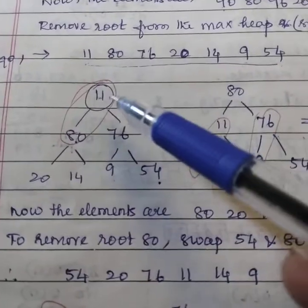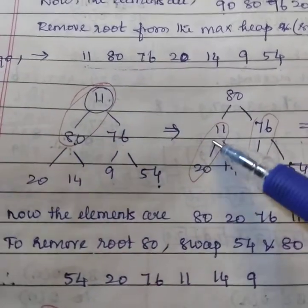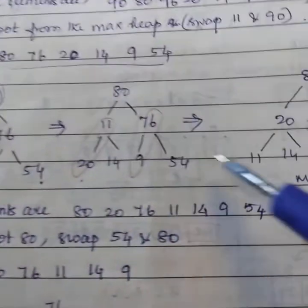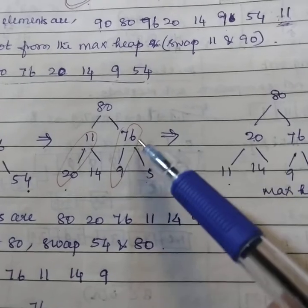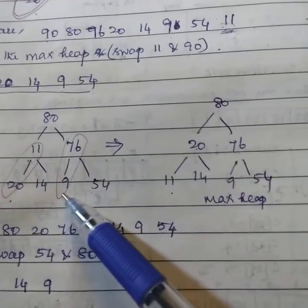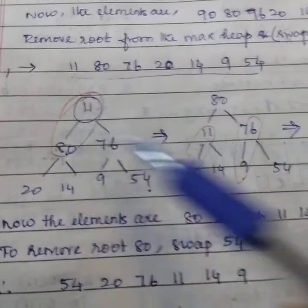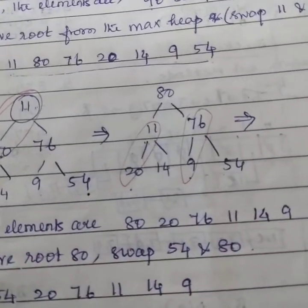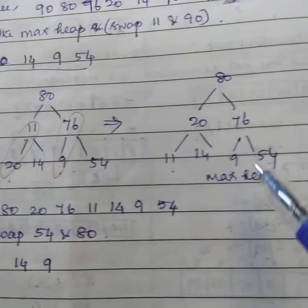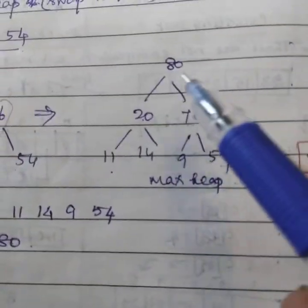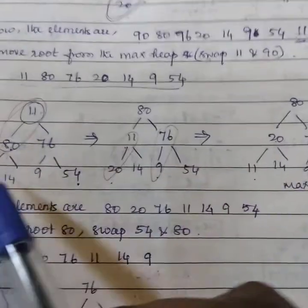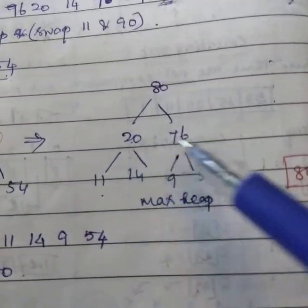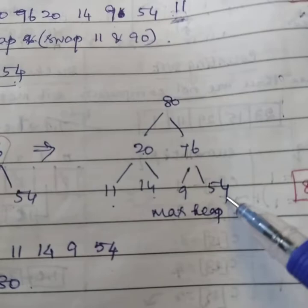Again, so 80 here and 11 here. Again, 11 and 20 has to be interchanged. Similarly, 76 and here, no need. So these two are the values need to be interchanged. This one and this one. So the final max heap for this values will be 80, 20, 76, 11, 14, 9, 54.